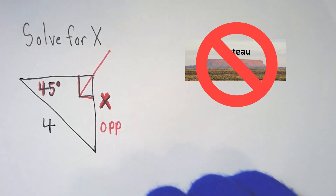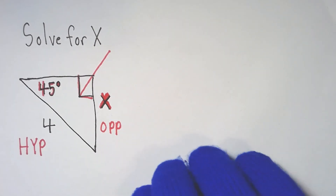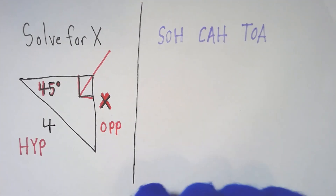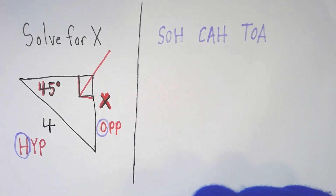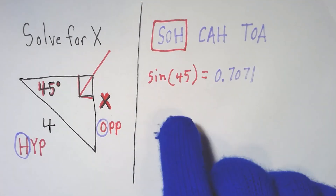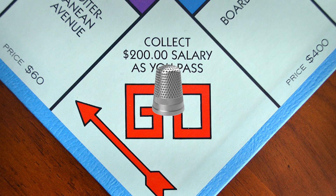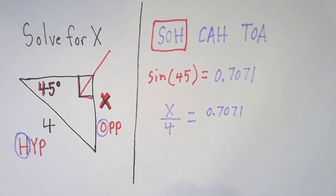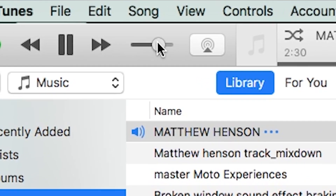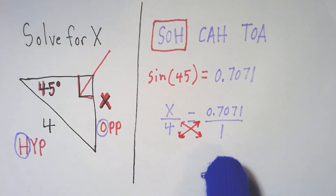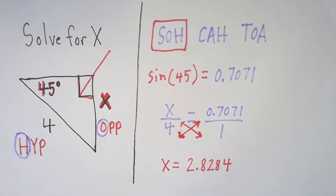Use the box to draw the arrow — sky is the limit, there is no plateau. Hypotenuse identified, we on the move. SOH-CAH-TOA, we got to choose. O and H — gotta be the SOH. Sin 45, come on, let's go. X over 4 equals the decimal. Cross multiply details without flaws — X equals 2.8284.